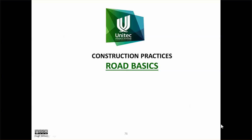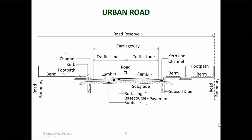In this video we're going to look at the basics of road construction. First, let's look at the different types of roads. There are urban roads in cities and towns which have kerb and channel, berms with footpaths, and things like that. The formation consists of the surfacing, which can be chip seal or asphalt concrete hot mix.